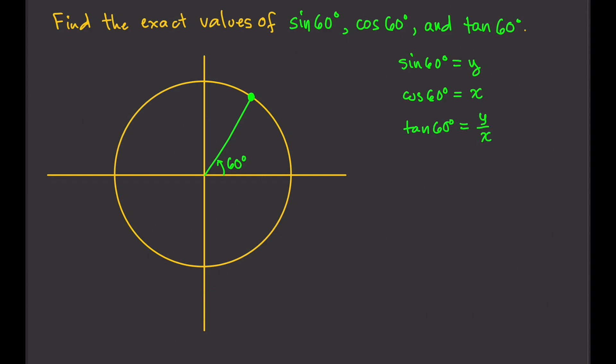So all we need to do is find the x and y-coordinates of this point right here. We know that this is 1 because this is a unit circle and the radius is 1, so the length of that line is 1. We can create a right triangle.